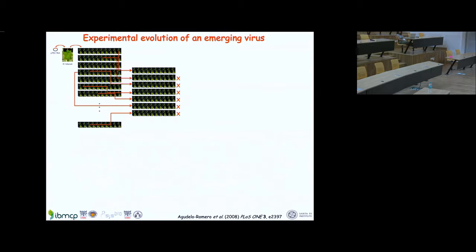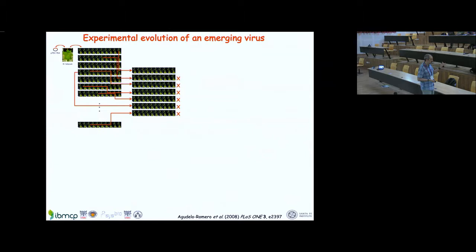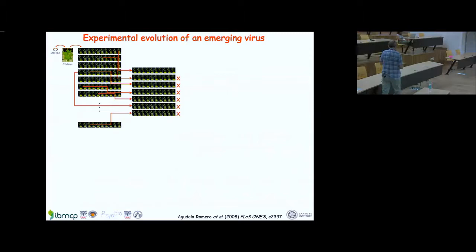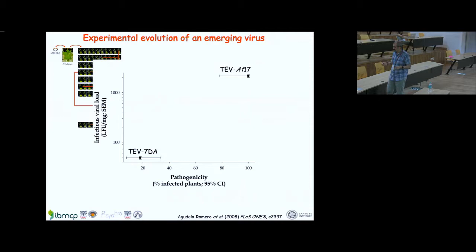Some of the seven lineages went extinct — we couldn't maintain the virus because the amount of viral particles produced in a plant were lost during purification, or because the inoculum was so small that plant defenses cleared the infection. But one lineage kept going for a number of generations, symptoms appeared, infection became easier, and after 17 passages we characterized that lineage, calling it ATV-AT17.